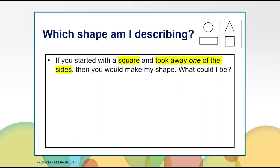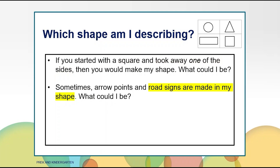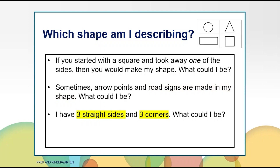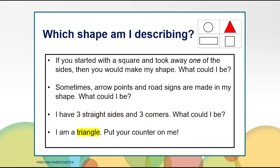Let's try to guess another shape. Here is the first clue: If you started with a square and took away one of the sides, then you would make my shape. What could I be? Here is the second clue: Sometimes arrow points and road signs are made in my shape. Here is the next clue. I have three straight sides and three corners. What could I be? The answer is a triangle. Put your counter on the triangle. The triangle has three straight sides and three corners. Also, when you turn it on its side, it looks different.